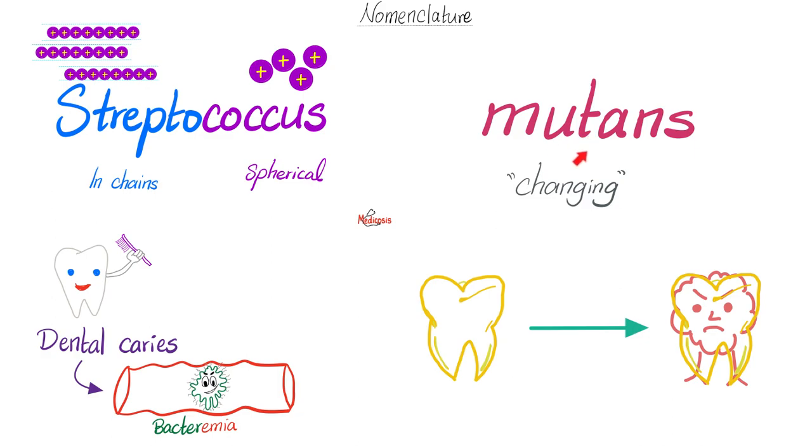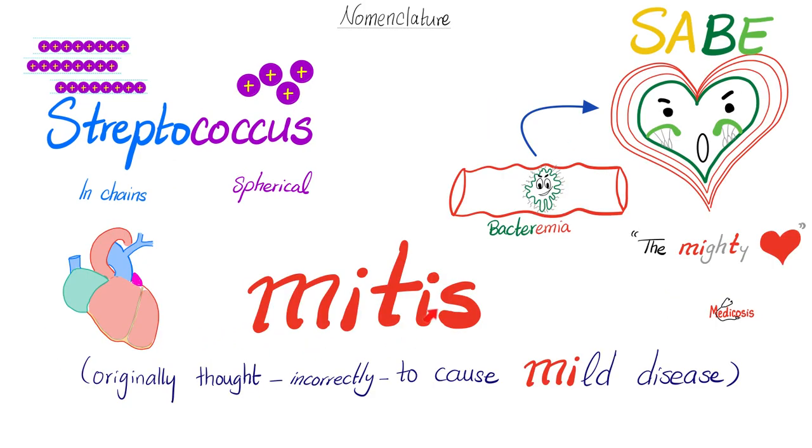Streptococcus mutans. Mutatis mutandis. Always changing. Mutations. Think of a freaking Frankenstein dentist. Dental caries can have Streptococcus mutans before you know it. Bacteremia. How about Streptococcus mitis? Remember my mighty heart. Bacteremia. And then subacute bacterial endocarditis. Why do they call it mitis? They thought, mistakenly, that it causes mild disease. Nothing could be further from the truth. It can cause a horrible disease.